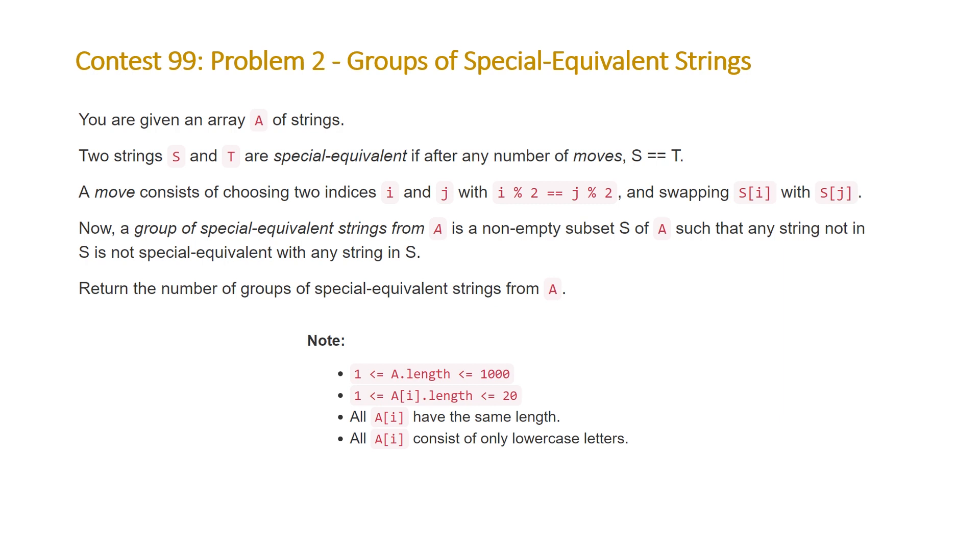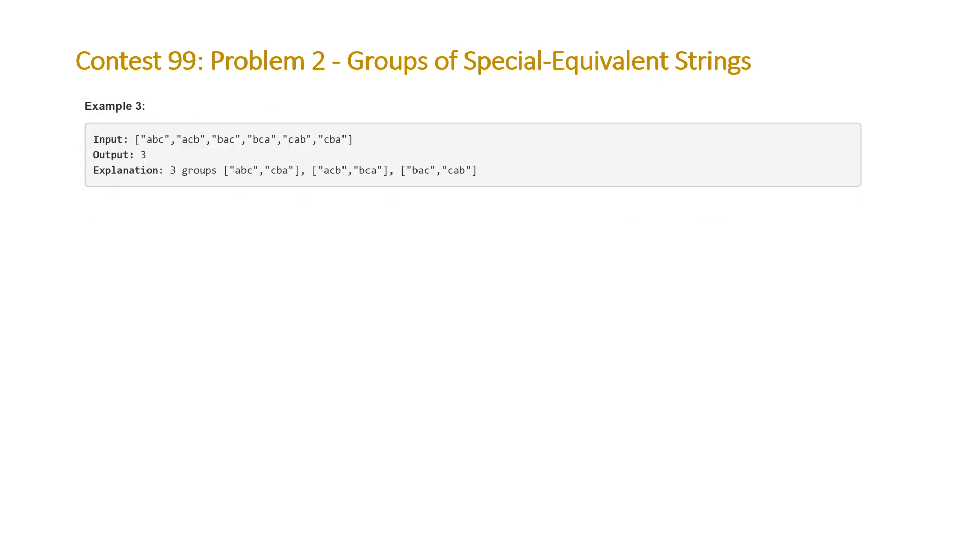Let's take a look at one of the examples that LeetCode provided us with. In this example we are given six strings to start with and basically this question is asking us if we're able to swap characters at even indices and we're allowed to swap characters at odd indices with each other, what are the unique strings we could end up with and we have to count those number of unique strings.